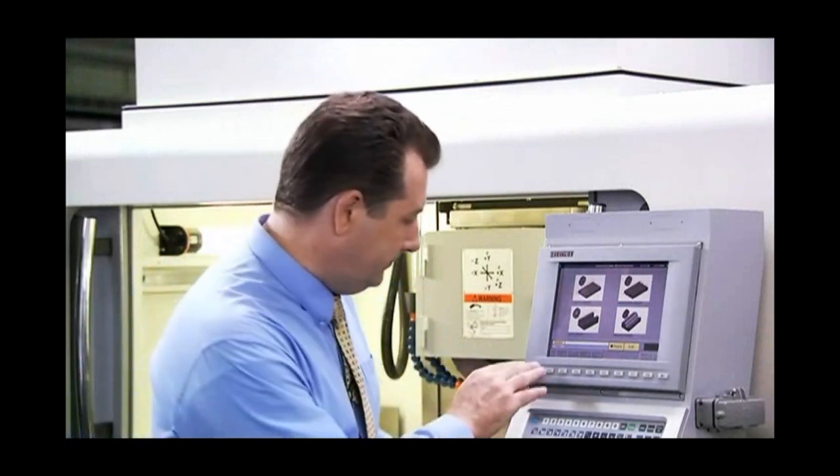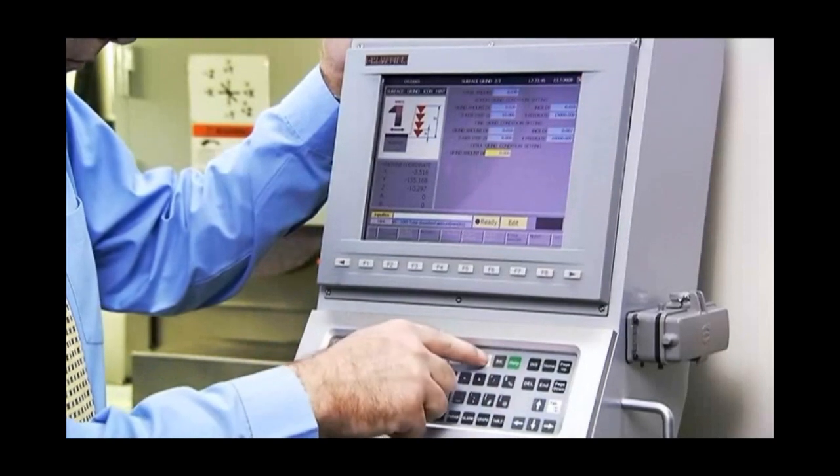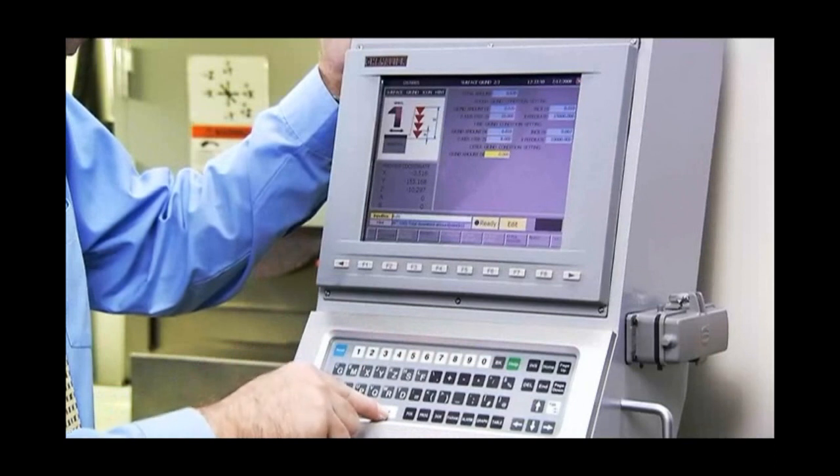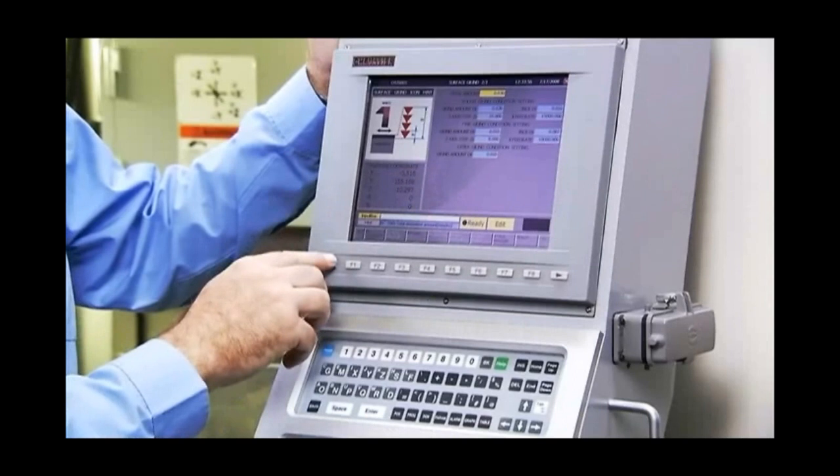One of the unique features of the Smart grinder from Chevalier is the additional cut feature. This allows additional cuts to be made without the need to start from the beginning of the grinding cycle. Just input the additional cut depth and the Smart machine will do the rest for you.